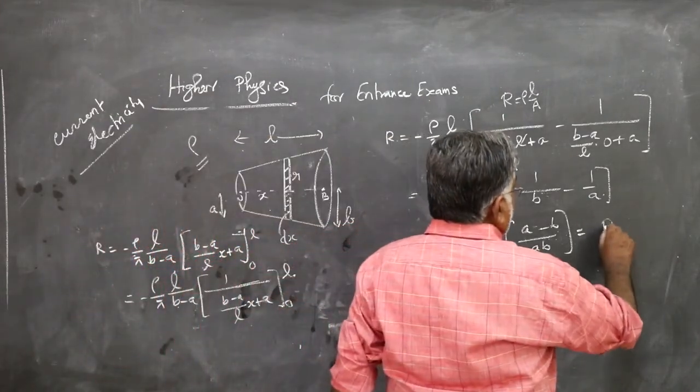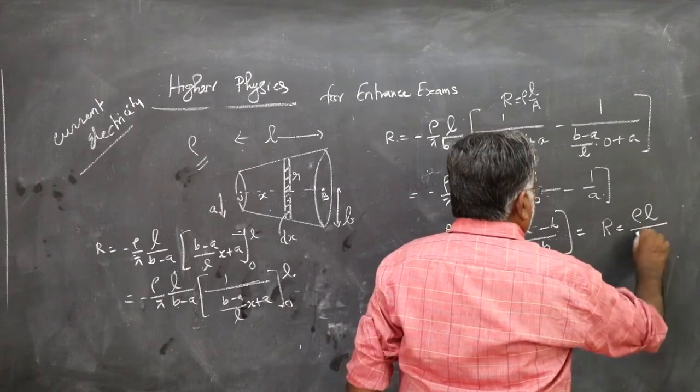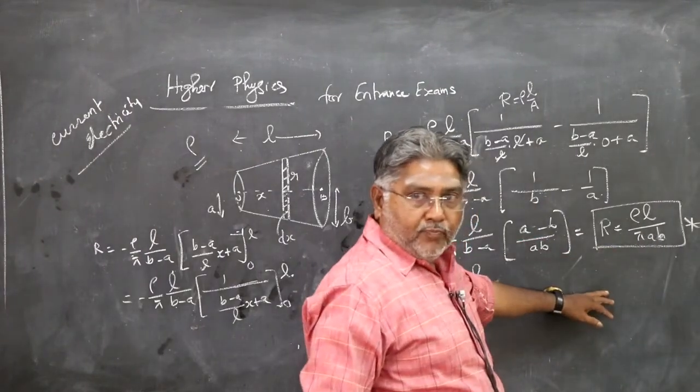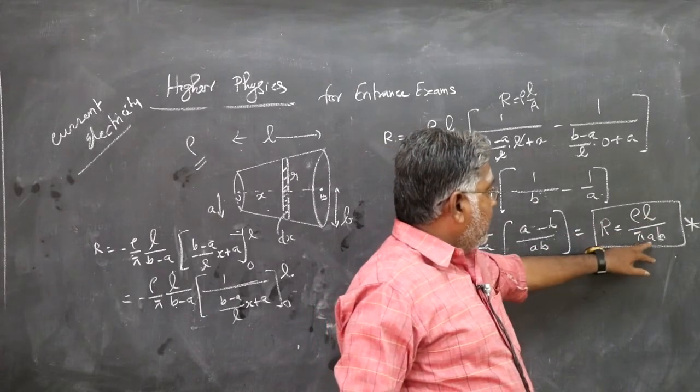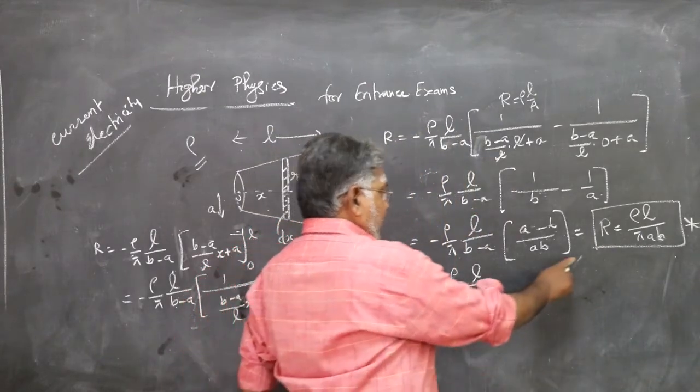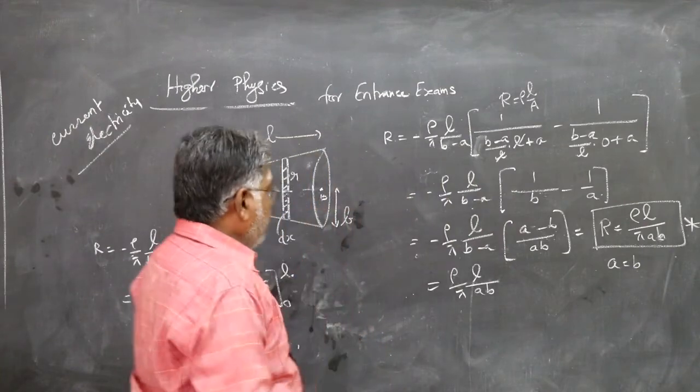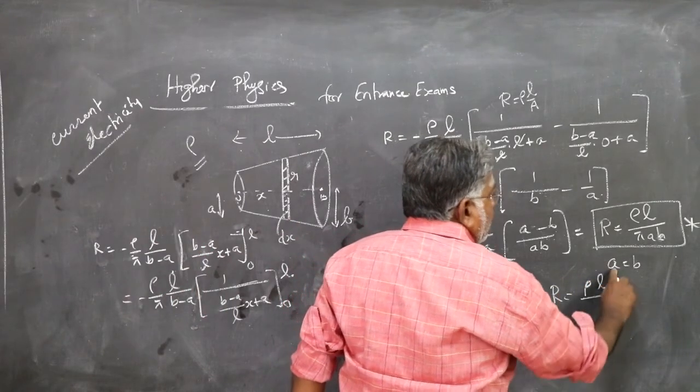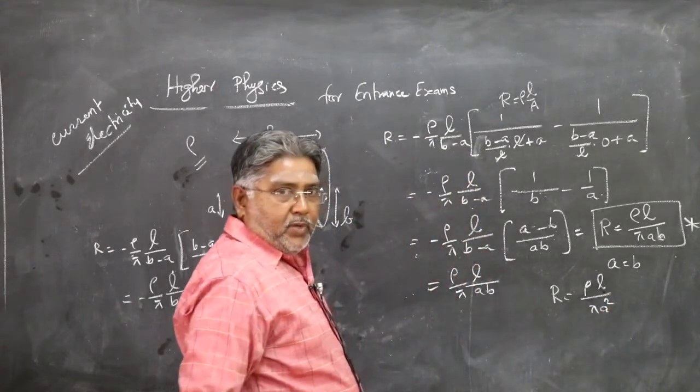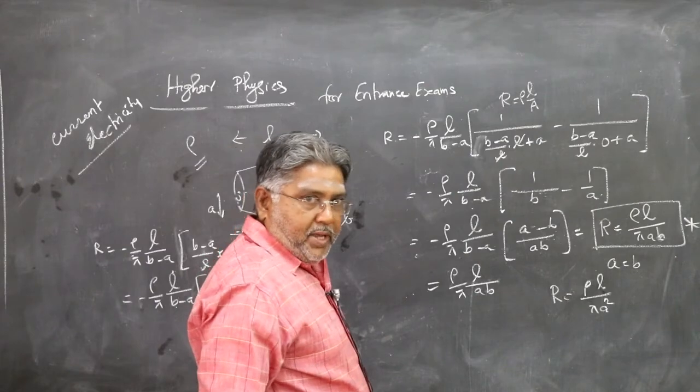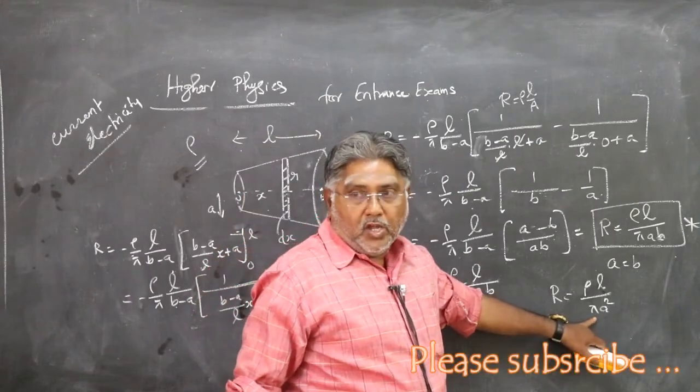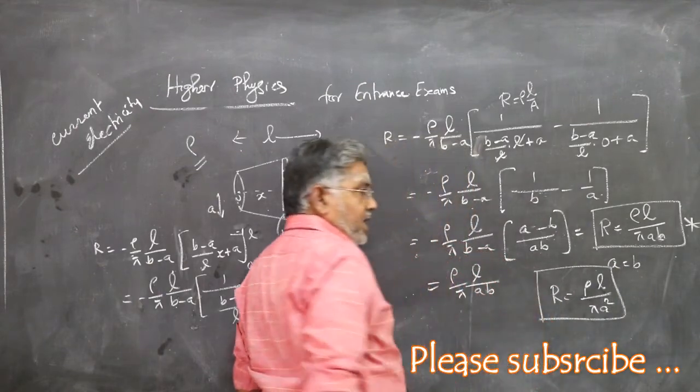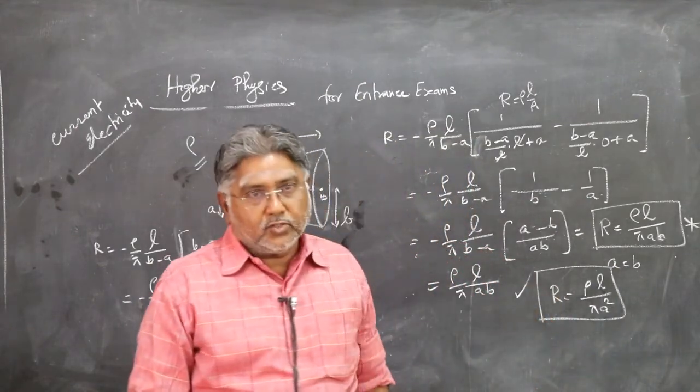Therefore, the resistance of the conical conductor is rho L by pi AB. So R equals rho L by pi AB. Suppose you take a special case where A equals B, that means this will be a cylinder. In that case, your R would be equal to rho L by pi A squared or pi B squared, which will be the area of cross-section. The cross-section being circular, it will be the formula for the area of the circle. This is a special case for uniform area of cross-section. Understood? Thank you.